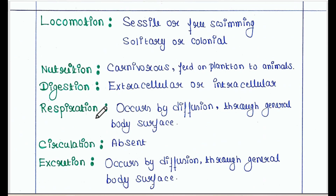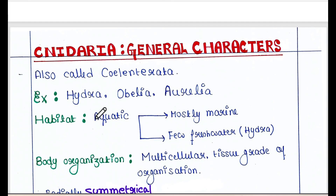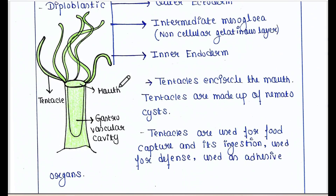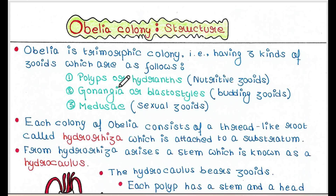What is Obelia? In our previous lecture, we have seen that Cnidaria is an important phylum of the animal kingdom, and Obelia is a member of Cnidaria. We will see its structure. Basically, Obelia is a trimorphic colony — 'tri' means three, and 'morphic' comes from the word morphology. They have three kinds of structures or zooids: polyps or hydrants, gonangia or blastostyle, and medusa.